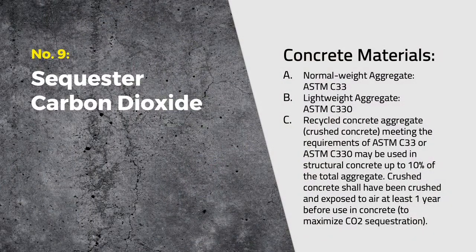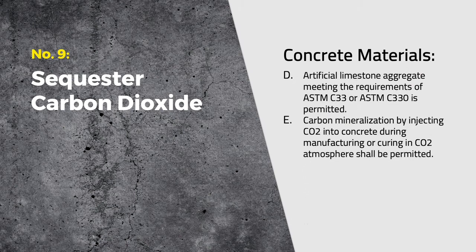Consider permitting the use of recycled aggregates made of demolished concrete on the project, and possibly require that those recycled aggregates be exposed to air for one year before being used. In some cases, a certain percentage of recycled aggregate can be used in concrete, or it can be required that all aggregate base or fill be made of crushed concrete. The use of carbon mineralization processes — such as injecting CO2 into concrete or curing in a CO2 environment — should be encouraged, as well as the use of artificial limestone aggregates. It is also worth considering the use of exposed concrete on the project, both interior and exterior, which has the added benefit of reducing finished material and absorbing CO2 throughout the lifetime of the building.